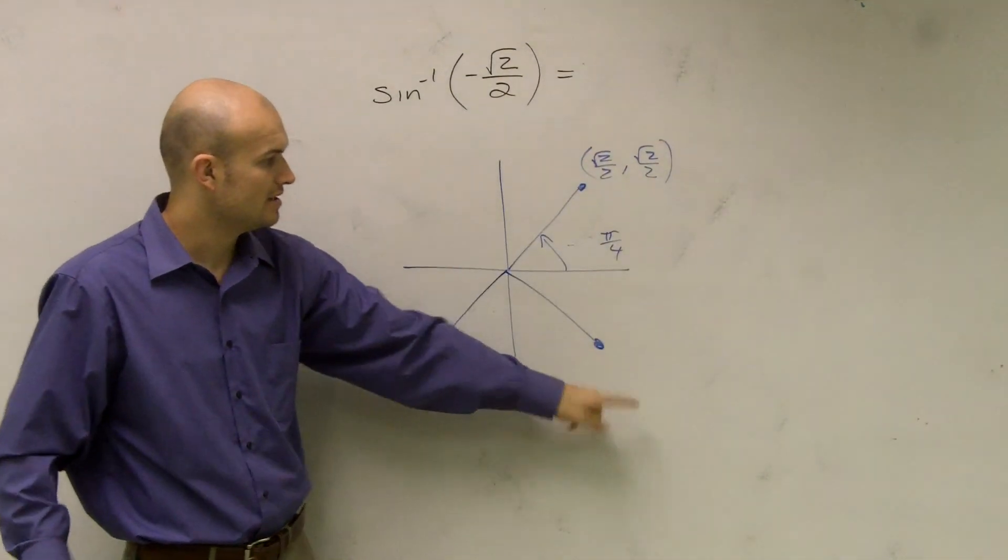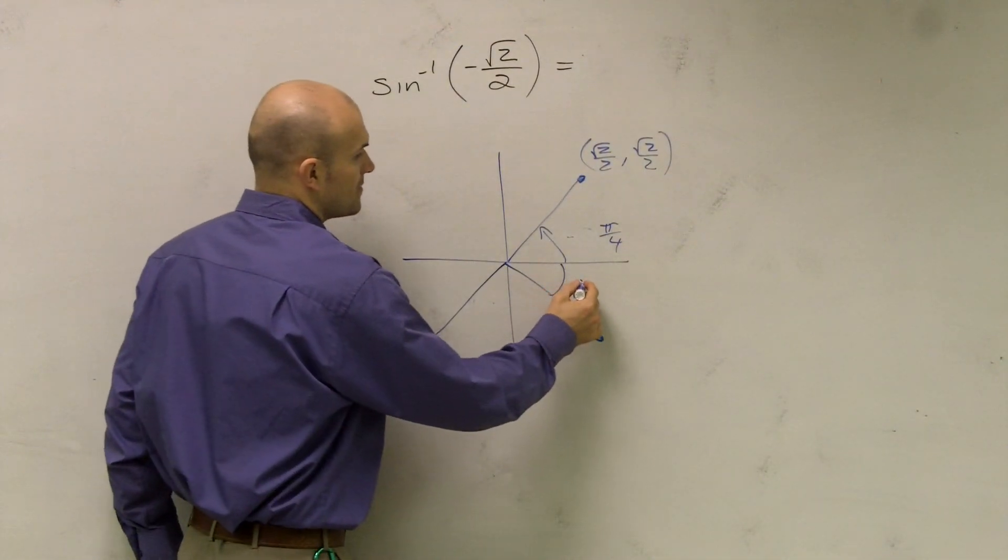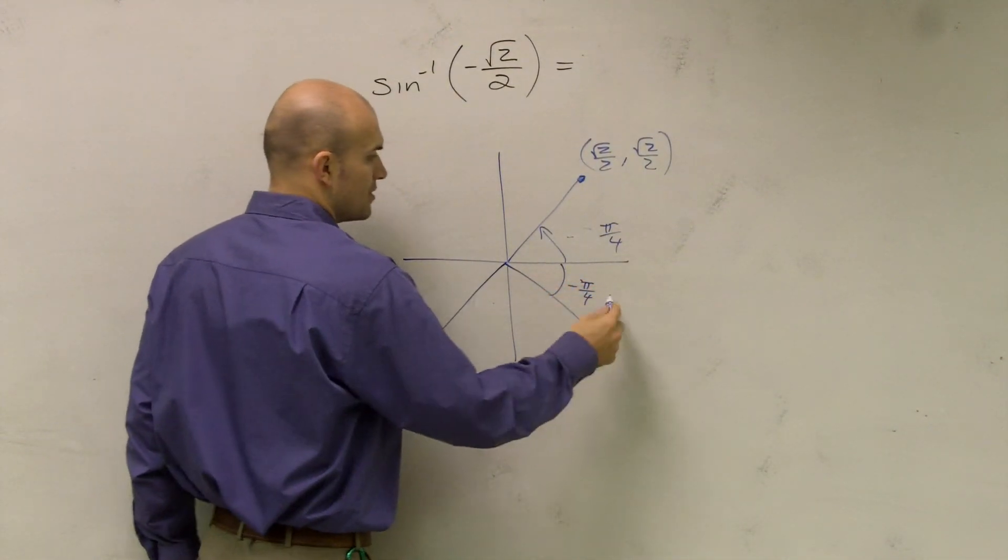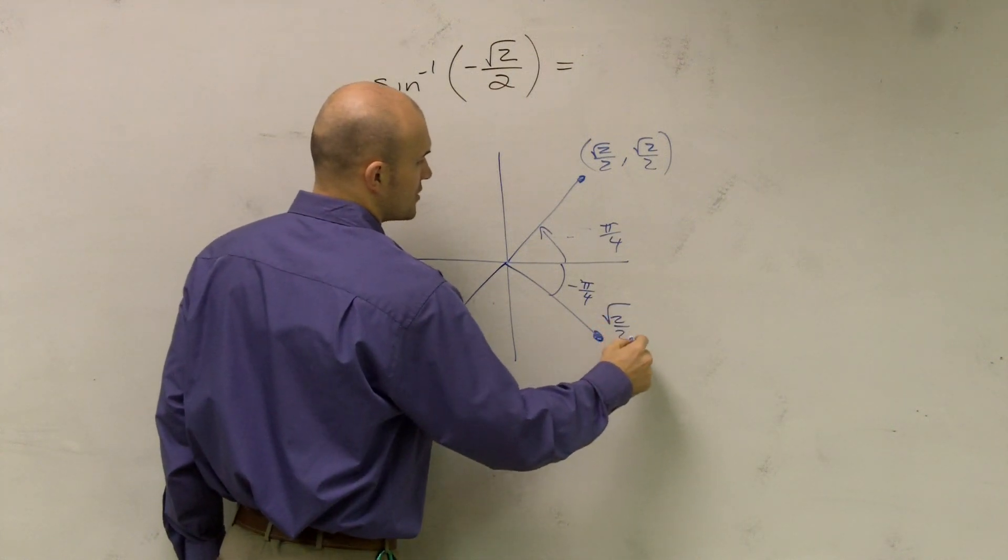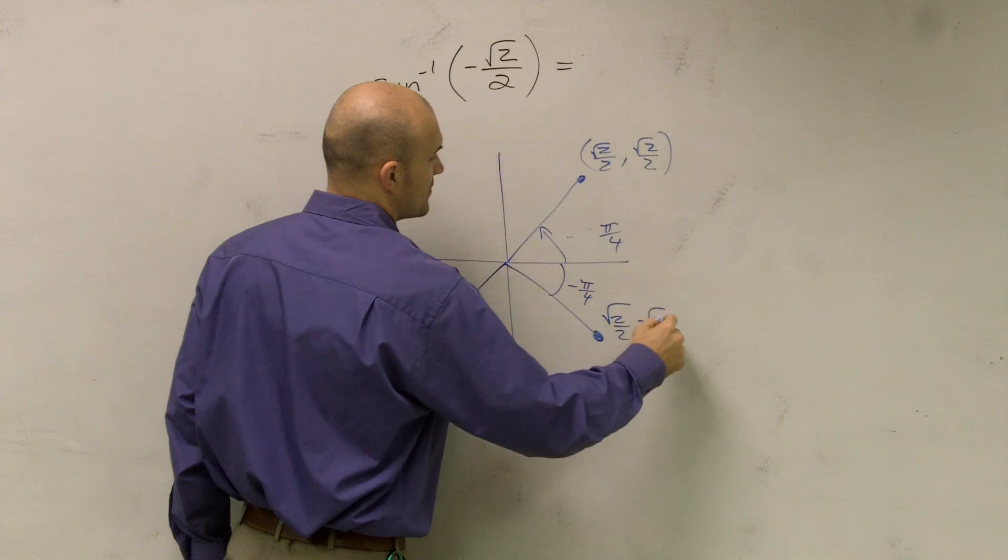So to find our two negatives, it's going to be at negative π/4, which is (√2/2, -√2/2).